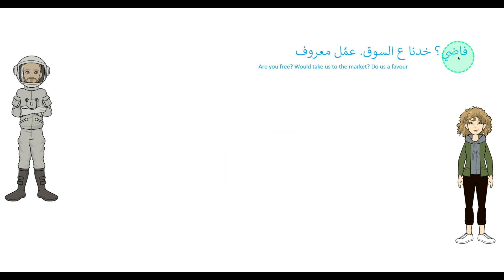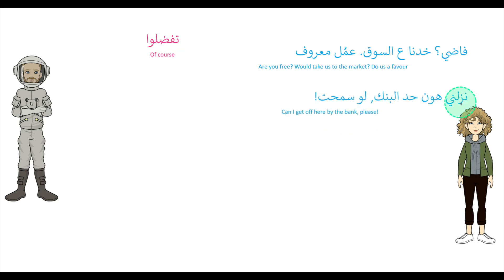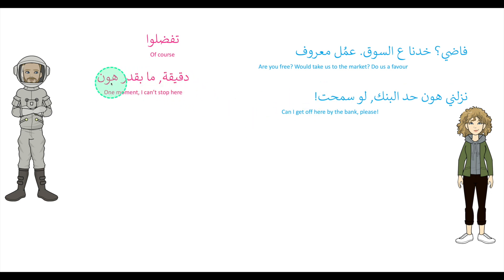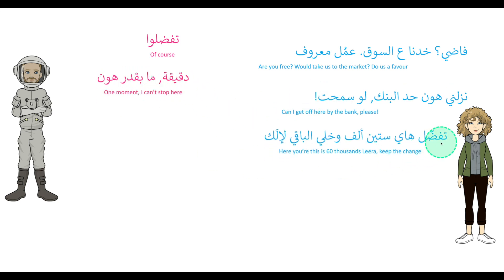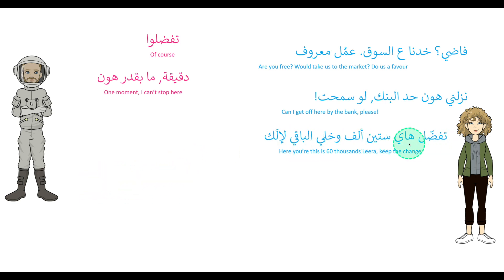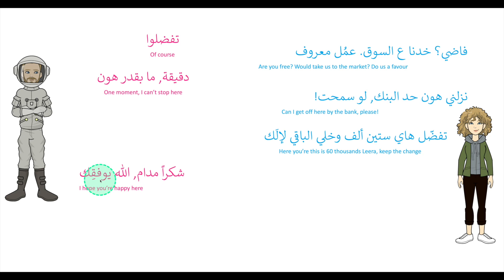Our third dialogue — quick read: خذنا عالسوق عمال معروف. تفضلوا. نزلني هون حد البنك لو سمحت. دقيقة، ما بقدر هون. تفضل، هاي ستين ألف وخلي الباقي لألك. شكرا مادام، الله يوفقك.